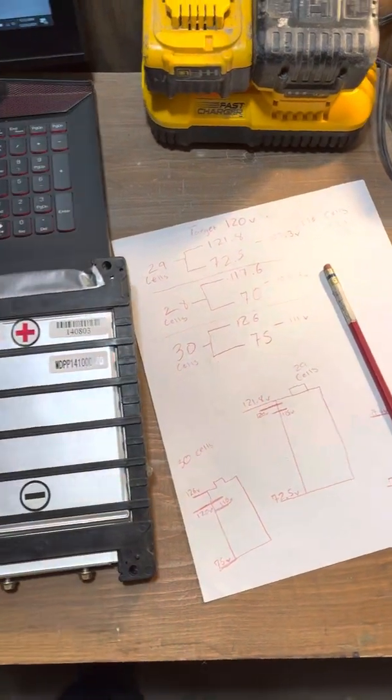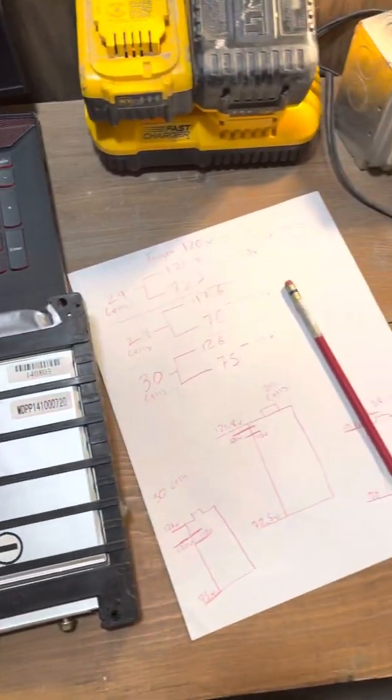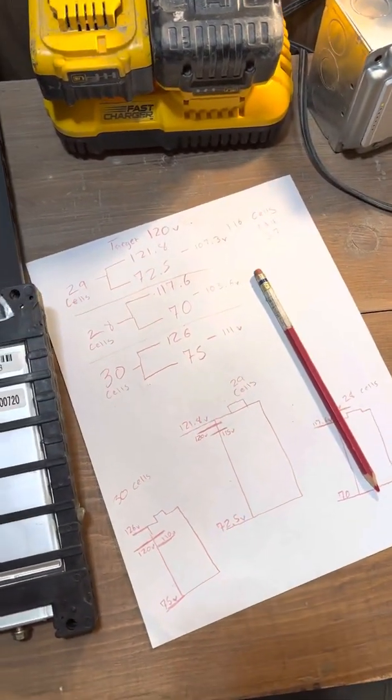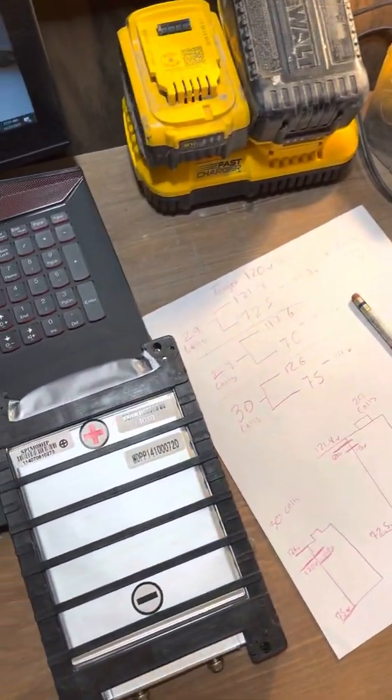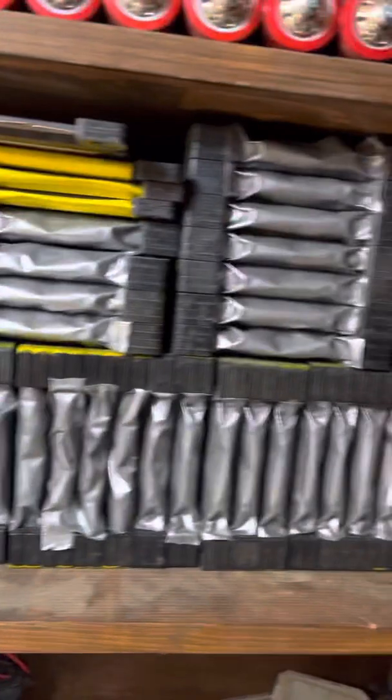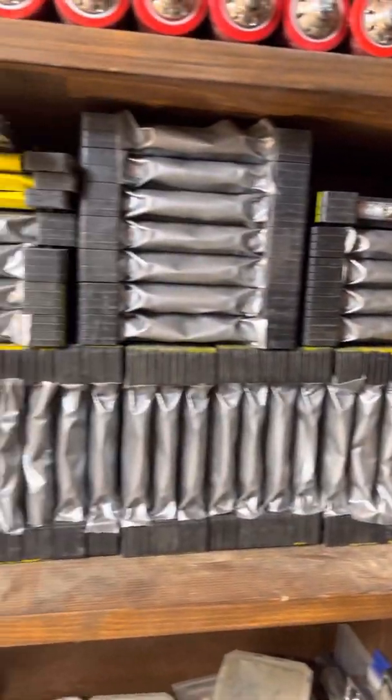All right, a little bit of midnight madness here. Out here in the shed, crunching some numbers for our Taylor Dunn cart. My target voltage here is going to be 120 volt. And I got these cells up here we're going to use from batteryhookup.com.